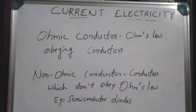Materials that obey Ohm's Law are called ohmic conductors. Conductors that don't obey Ohm's Law are called non-ohmic conductors. Examples of non-ohmic components include semiconductor diodes and triodes. These are the three points of failure of Ohm's Law.